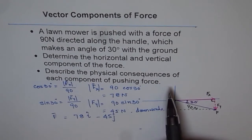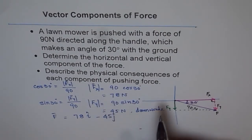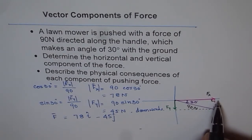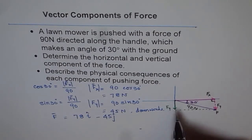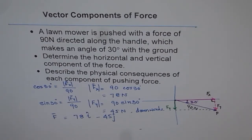The last part of the question: describe the physical consequences of each component of the pushing force. The horizontal component of the force helps to drive the lawnmower horizontally along the ground — it pushes it forward across the grass. The vertical component adds to the weight of the mower, acting downwards in the same direction as the force of gravity. We will do a couple more questions based on resolving forces into components and apply the knowledge learned in vectors.